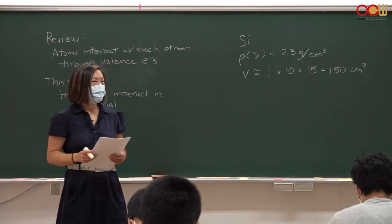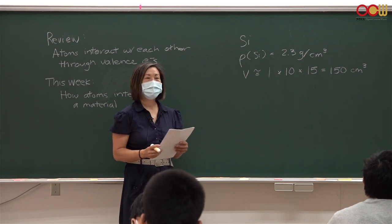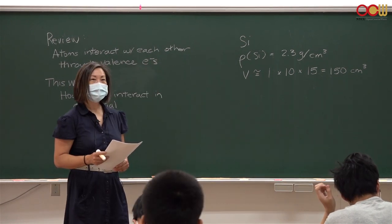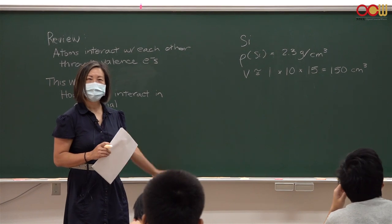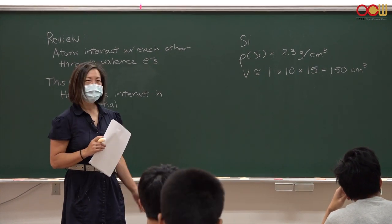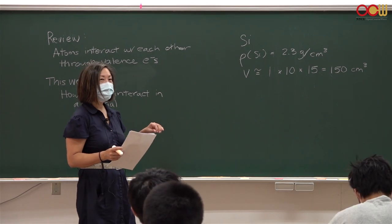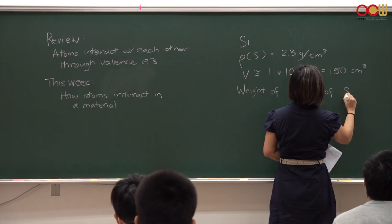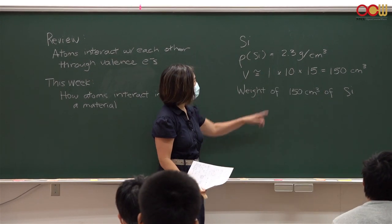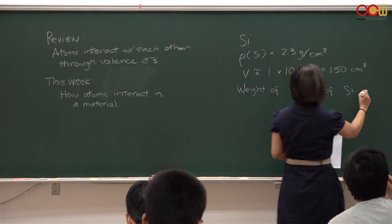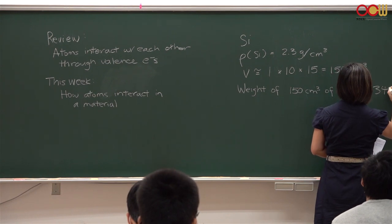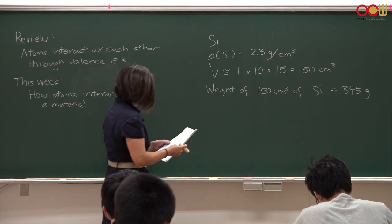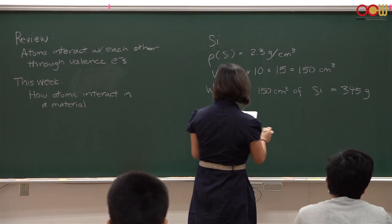So that's the volume. How would you calculate how many atoms are in a cell phone? Where would you start, and do you need any other information? You know the volume and the density, so if your cell phone were made entirely of silicon, how much would it weigh? You multiply those two and you get the grams — 345 grams.